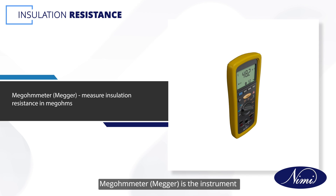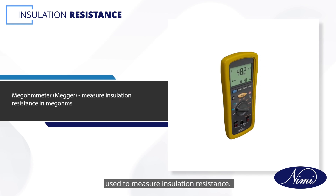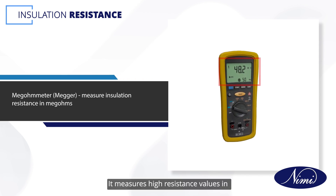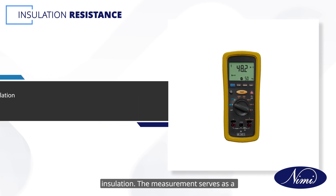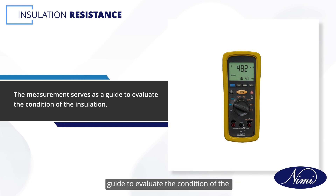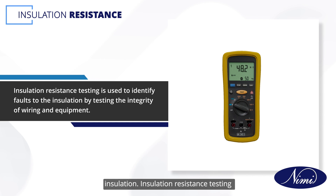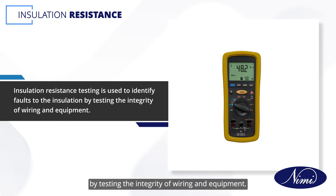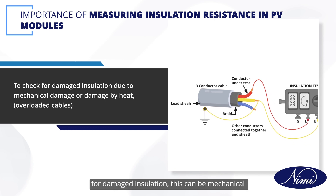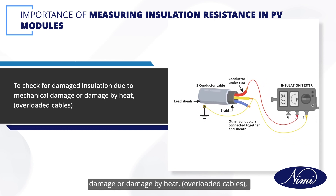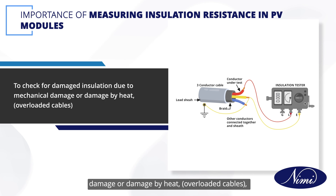The Megohmmeter (Megger) is the instrument used to measure insulation resistance. It measures high resistance values in megohms without causing damage to the insulation. The measurement serves as a guide to evaluate the condition of the insulation. Insulation resistance testing is used to identify faults to the insulation by testing the integrity of wiring and equipment. The purpose of the IR test is to check for damaged insulation, which can be mechanical damage or damage by heat or overloaded cables.